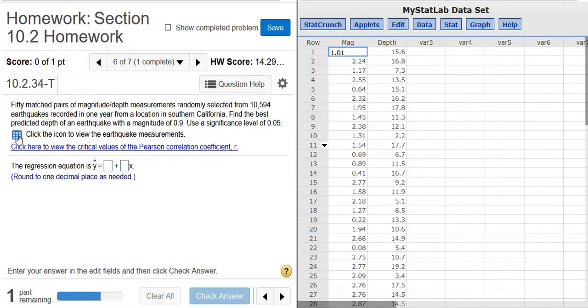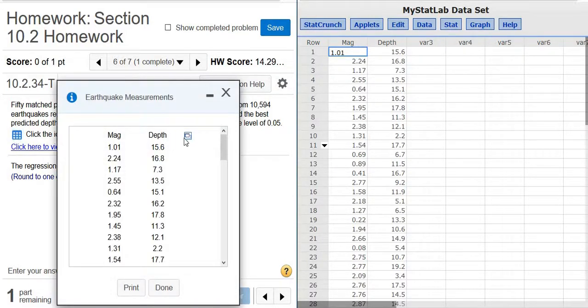So you have to first click where it says click the icon to view the earthquake measurements. So you start by clicking this little icon here and then you click this little box and you click open in StatCrunch, and when you do that it opens everything for you in StatCrunch and types everything in for you, which is really nice.